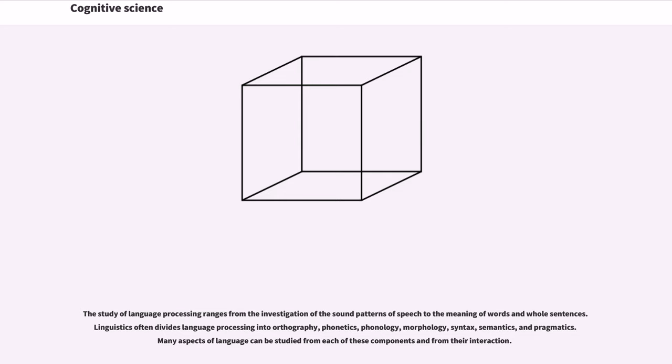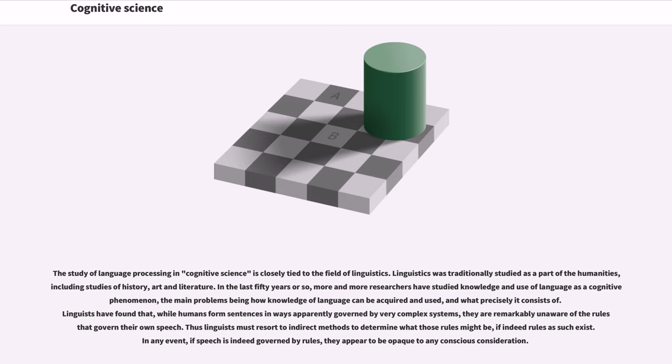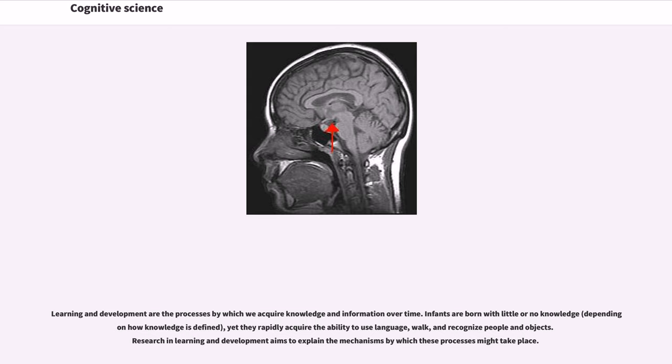The study of language processing ranges from the investigation of the sound patterns of speech to the meaning of words and whole sentences. Linguistics often divides language processing into orthography, phonetics, phonology, morphology, syntax, semantics, and pragmatics. Many aspects of language can be studied from each of these components and from their interaction. The study of language processing in cognitive science is closely tied to the field of linguistics. Linguistics was traditionally studied as a part of the humanities, including studies of history, art and literature. In the last fifty years or so, more and more researchers have studied knowledge and use of language as a cognitive phenomenon. Linguists have found that, while humans form sentences in ways apparently governed by very complex systems, they are remarkably unaware of the rules that govern their own speech. Thus linguists must resort to indirect methods to determine what those rules might be.